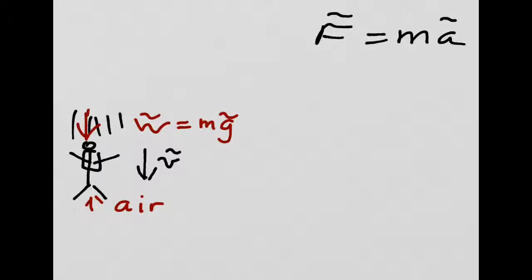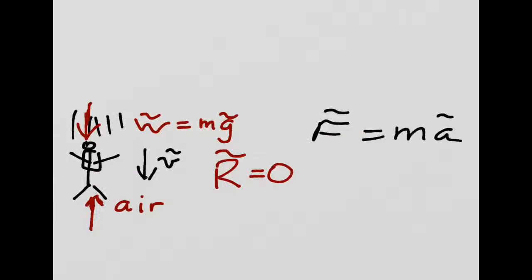Let's see what happens when he's fallen a little bit further. Well, the weight is the same, but the air resistance will be bigger, so that it is equal and opposite to the weight force. In other words, now the resultant is equal to zero. So, if we substitute into F equals ma, we have the resultant force, which is zero, is equal to the mass, which is unchanged. So, therefore, the acceleration must be zero. In other words, the velocity remains unchanged. Back to Newton's first law.